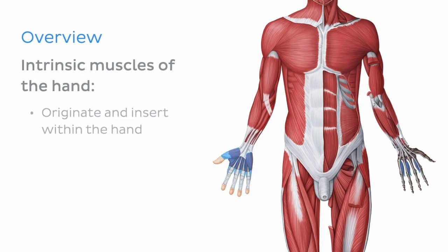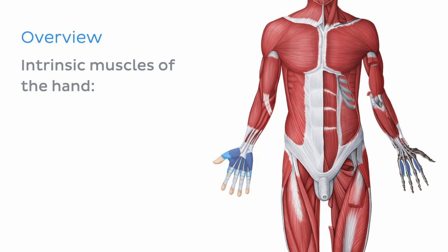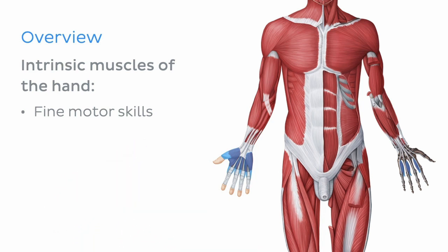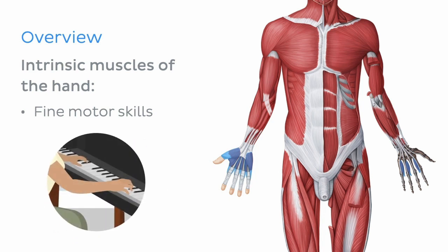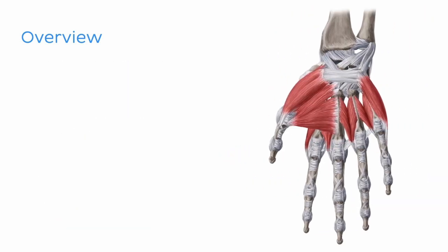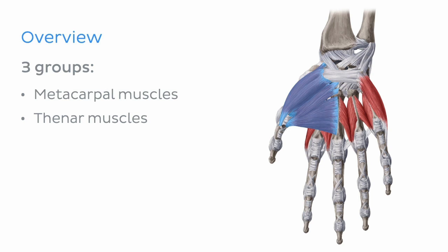These are the muscles which originate and insert within the hand. These muscles are responsible for our fine motor skills, helping us to hold a pen, play the piano, and even button up our jackets. The intrinsic muscles of the hand can be divided into three groups: the metacarpal muscles, the thenar muscles, and the hypothenar muscles.